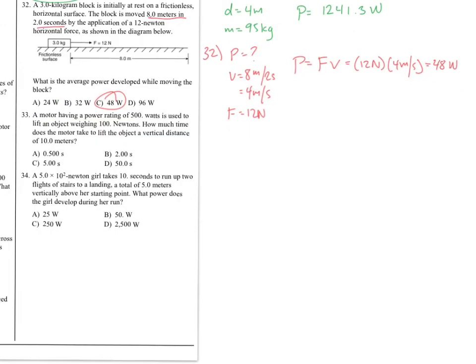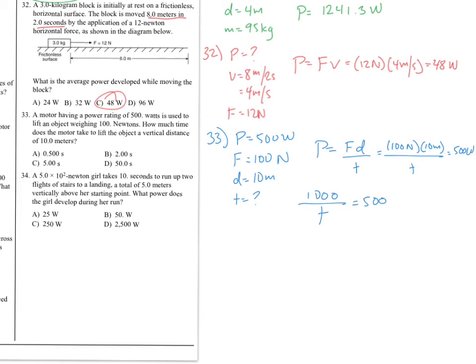Okay, the penultimate question, number 33. Okay, power is 500 watts. We have an object weighing 100 newtons because it's being lifted vertically. That's our force. Our distance is 10 meters and we're looking for time. So we're gonna have 1,000 over t is equal to 500. 1,000 divided by 500 is t. T is equal to 2 seconds.